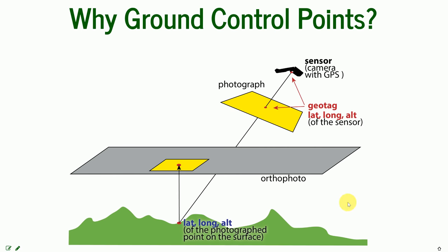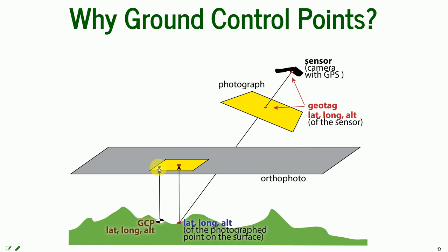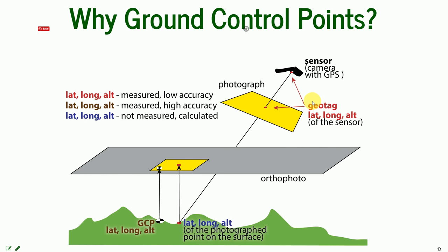So what do we do to have, instead of the geotagged latitude, longitude, and altitude, the actual coordinates of the point on the surface? We can place a GCP that will be visible on the photograph, measure its exact location — latitude, longitude, and altitude — and in relation to those, calculate the latitude, longitude, and altitude of the photographed point on the surface. As you can see, the geotag measurements are made with low accuracy, while the GCP measurements are made with high accuracy, and the actual coordinates of the related point are then calculated in the process we are going to describe soon.